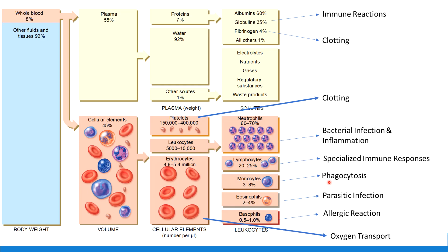Monocytes' primary function is phagocytosis — meaning they eat things. When monocytes are activated, they turn into a macrophage, a big eater. Their job is to eat things and then take the surface proteins from that bacteria or virus and show them to lymphocytes. Remember that lymphocytes come in two varieties: T-cells and B-cells. There are three kinds of T-cells, and B-cells that turn into plasma cells or into memory cells.